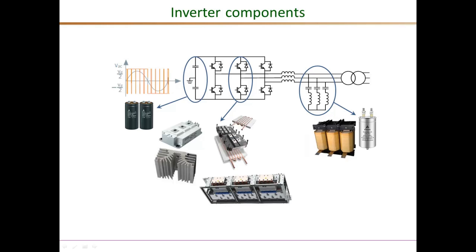Because of the high switching frequency, we need to filter the high-frequency components, and these are the LCL filters that remove those components. On the DC link, there is a bank of large electrolytic capacitors to keep the DC voltage smooth, and especially in single-phase applications, to support the 120 Hz power pulsations.